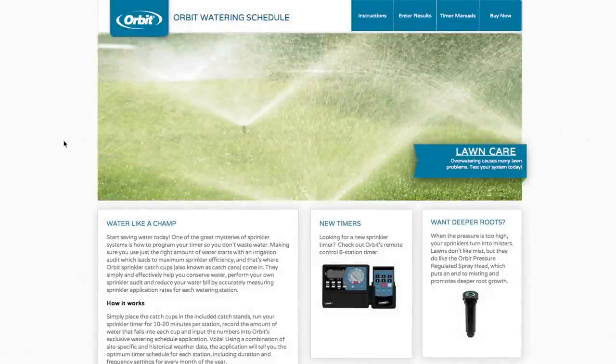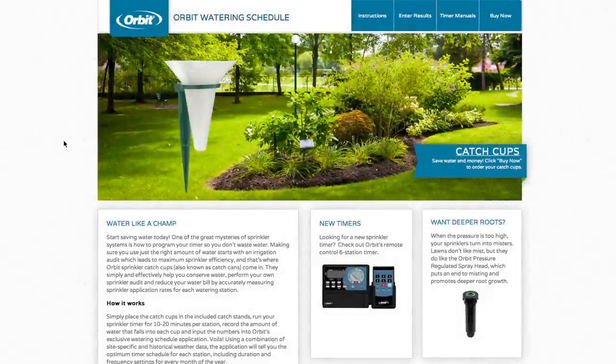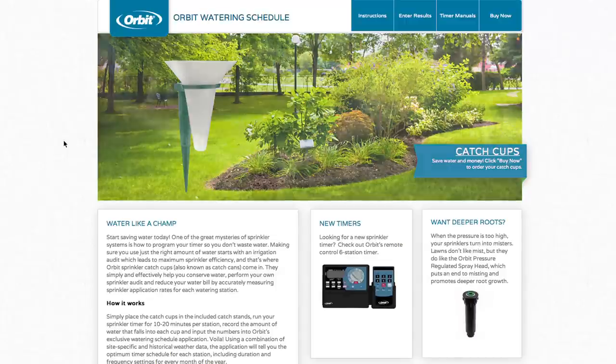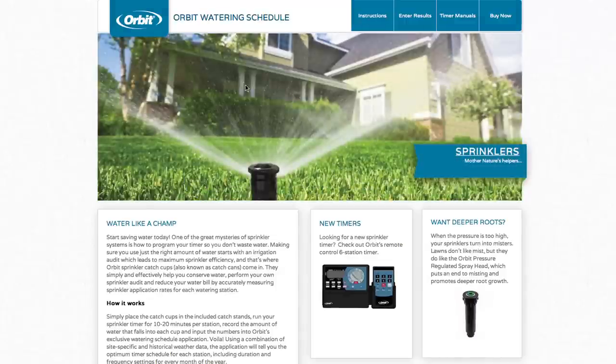After you've recorded the catch cup data on your sheet of paper, go to WateringSchedule.com to enter the numbers you wrote down. Once you're on WateringSchedule.com, click the Enter Results button.